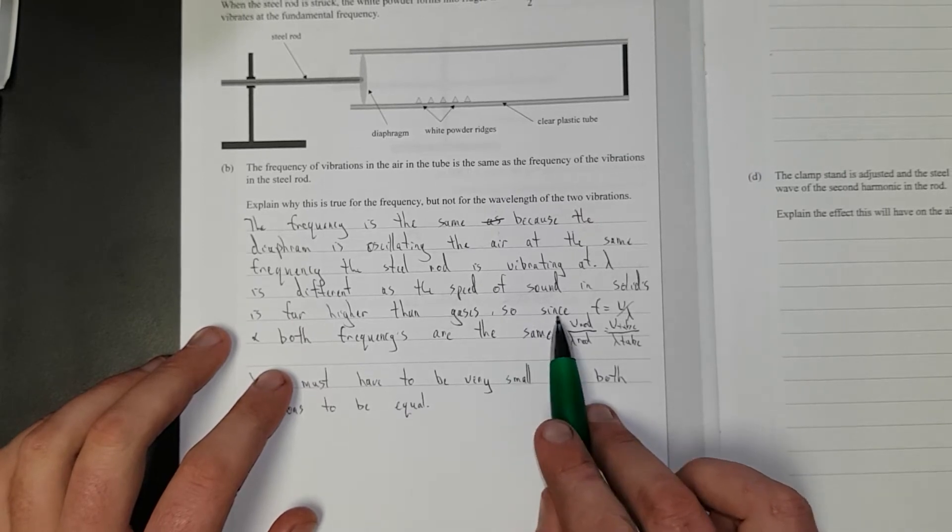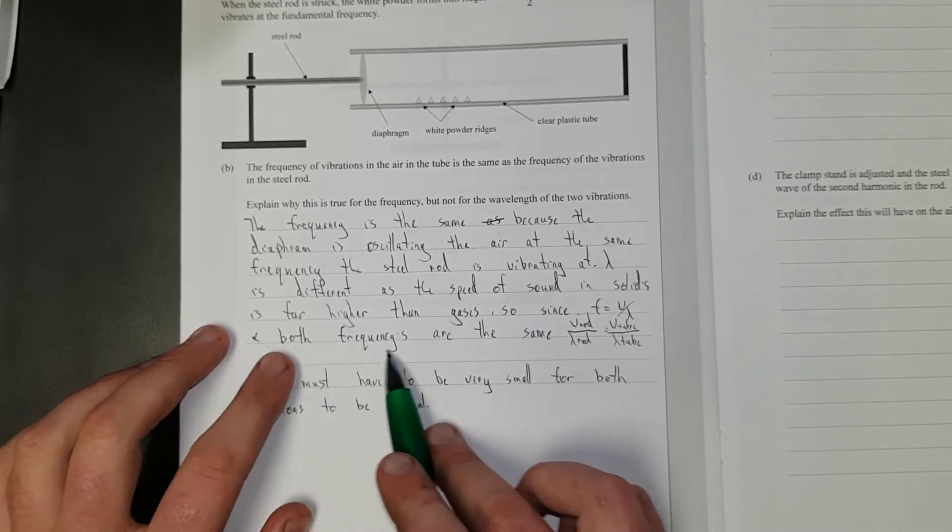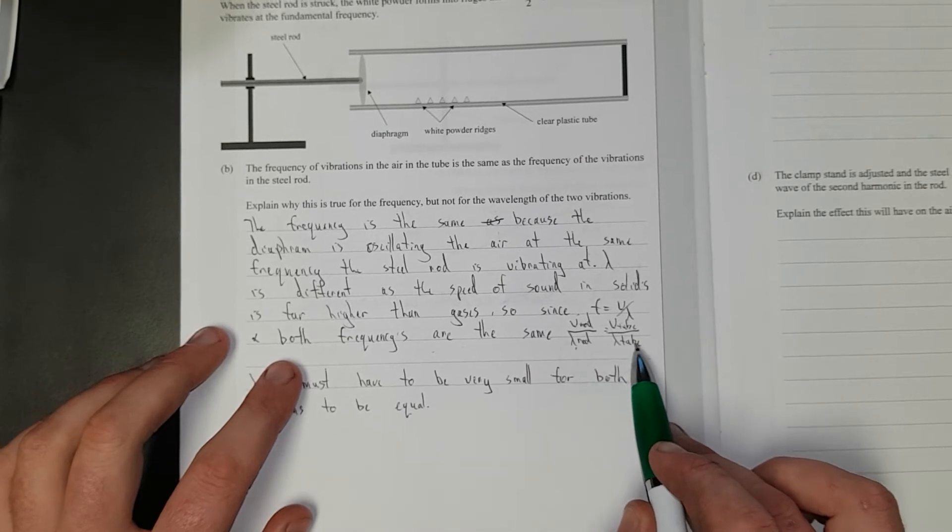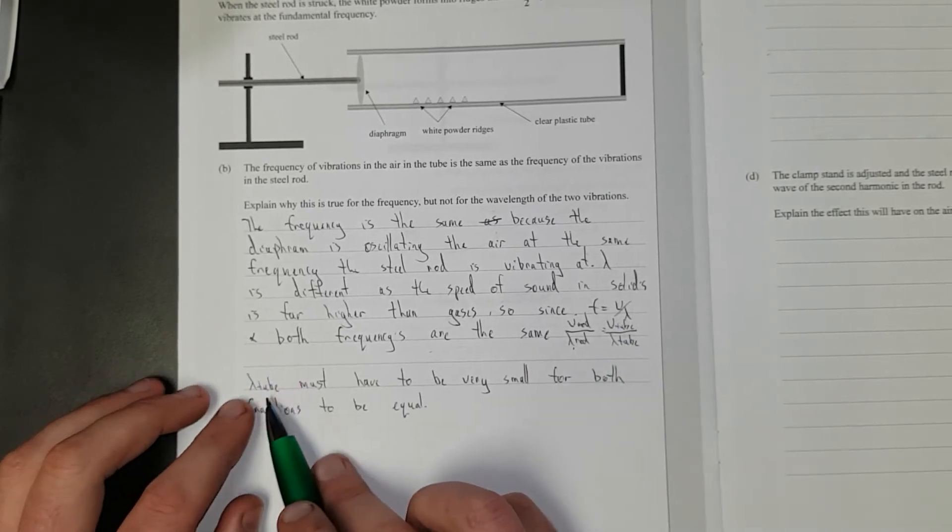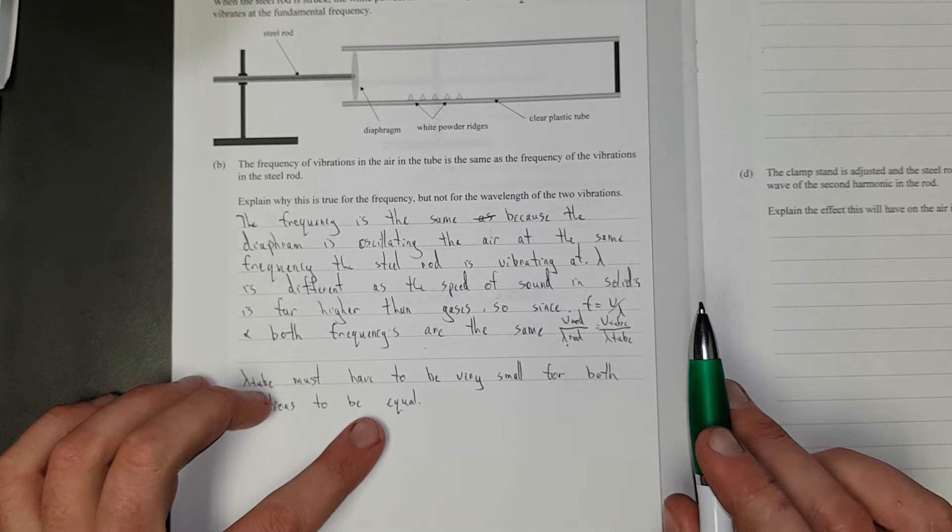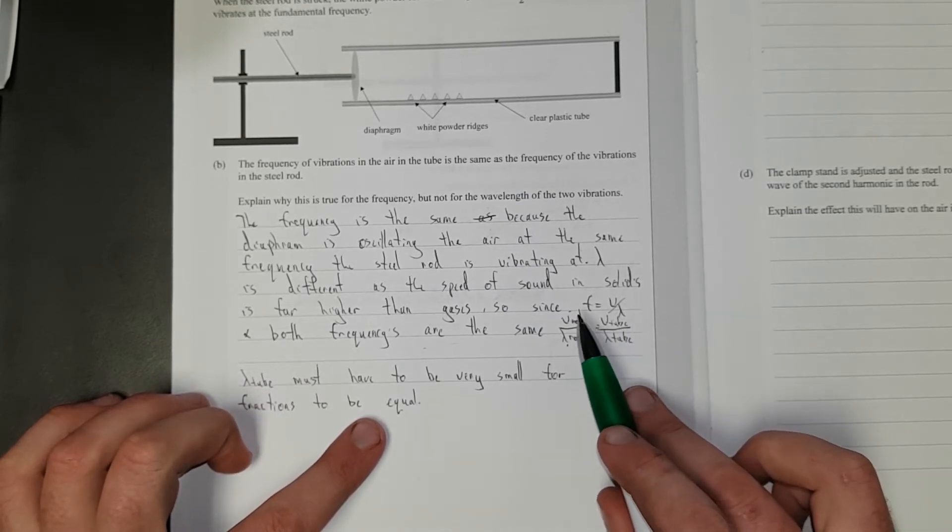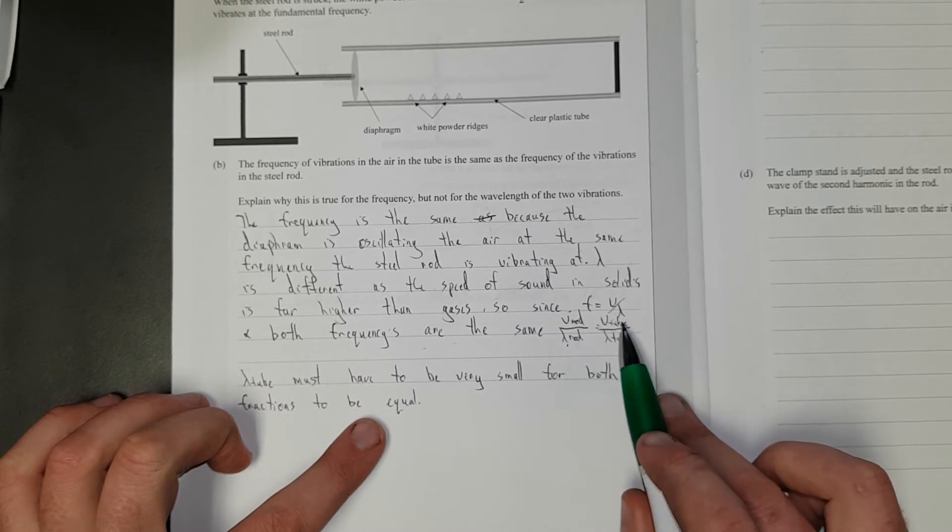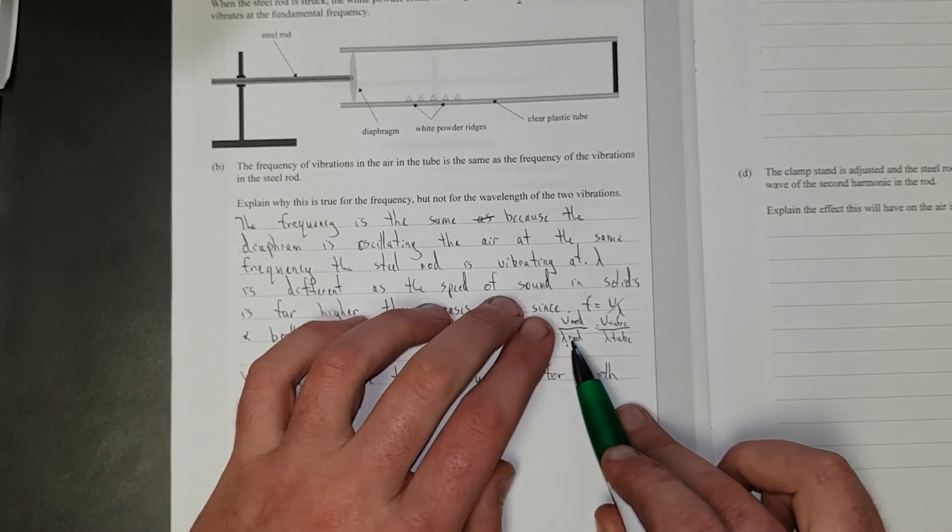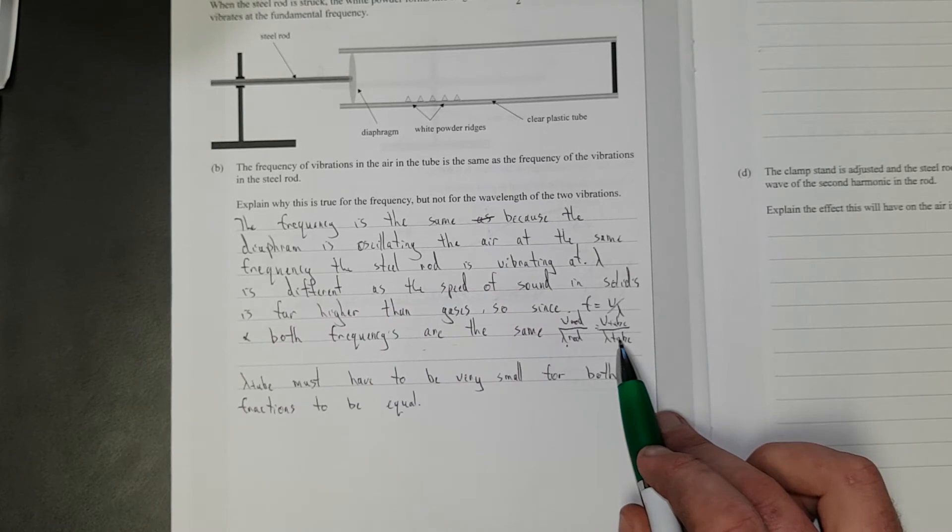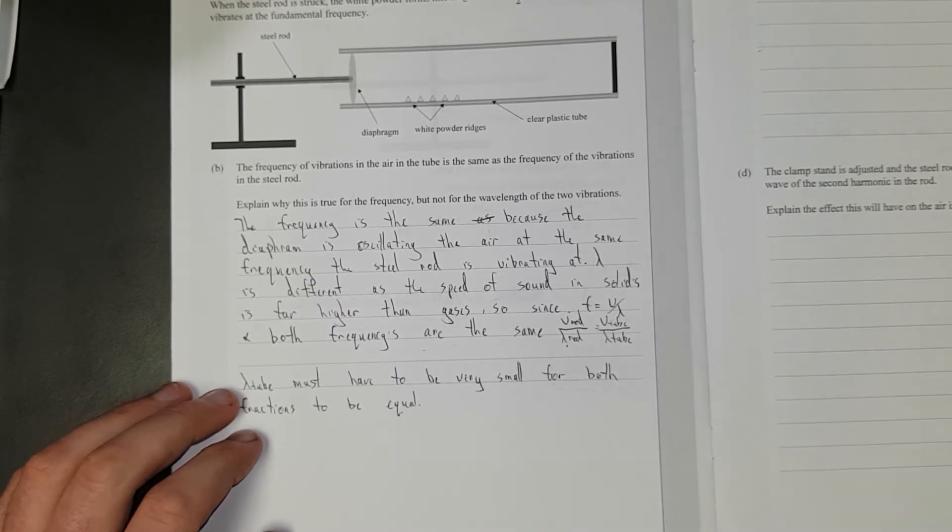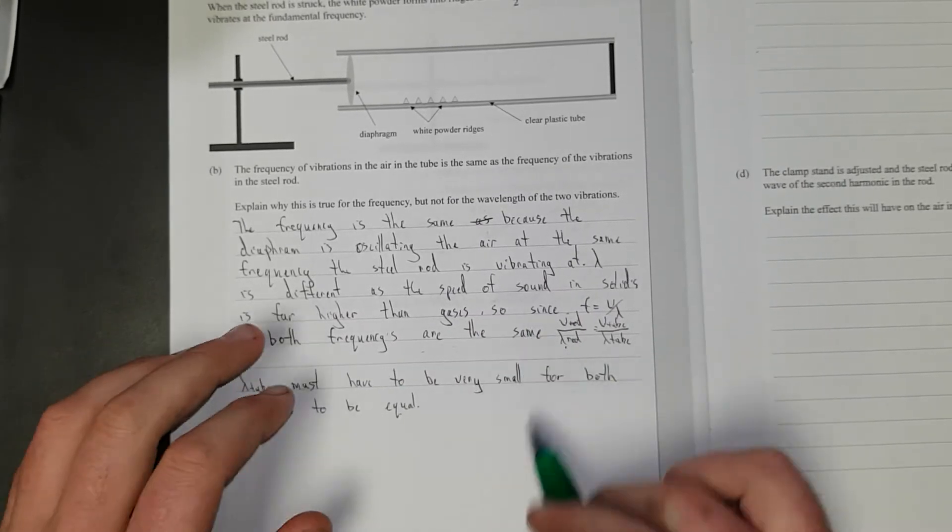Since f equals v over lambda, and both frequencies are the same, the velocity of the rod divided by the wavelength of the rod is equal to the velocity of the tube divided by the wavelength of the tube, because both frequencies are the same. The wavelength of the tube must have to be very small for both the fractions to be equal. The speeds are different. Once I see the speed of sound, I usually just stop marking because... Well, I don't stop marking. I read the rest, but that's correct.